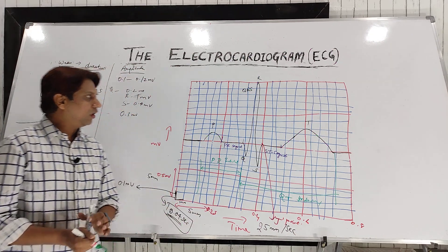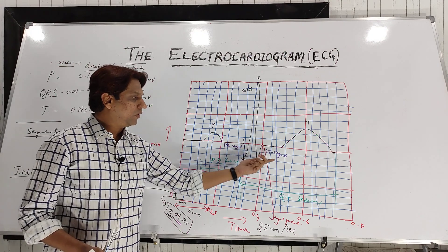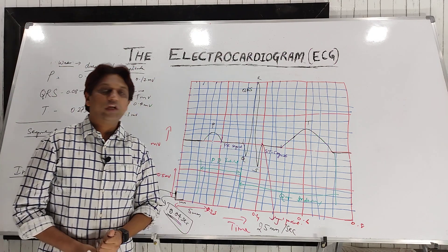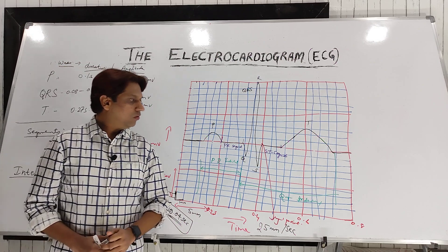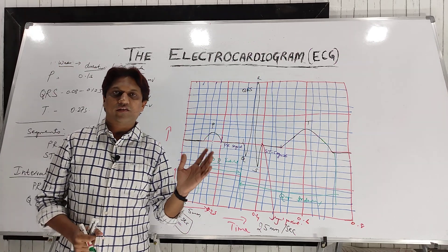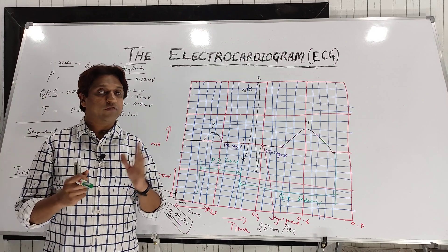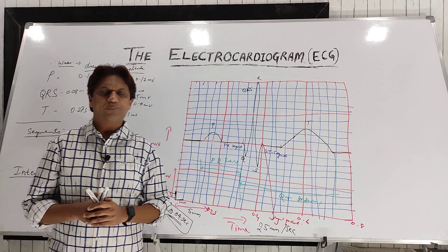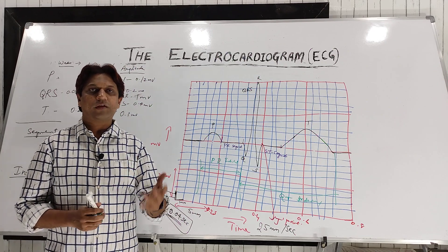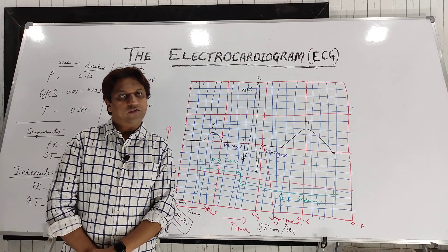You should remember these normal waves — P wave, QRS complex, T wave — the two important segments, PR segment and ST segment, and the PR interval and QT interval. We will discuss what a lead in an ECG is and the different leads — in total we use a 12-lead system — in the next video. Please subscribe to our channel and click the notification icon. Thank you.